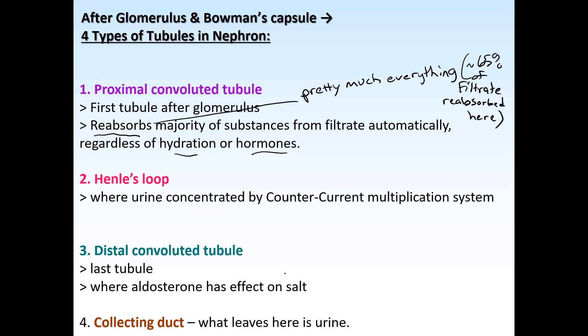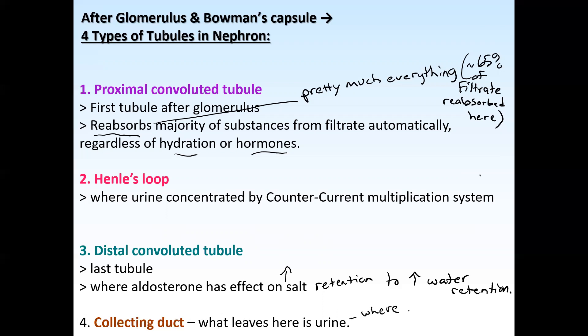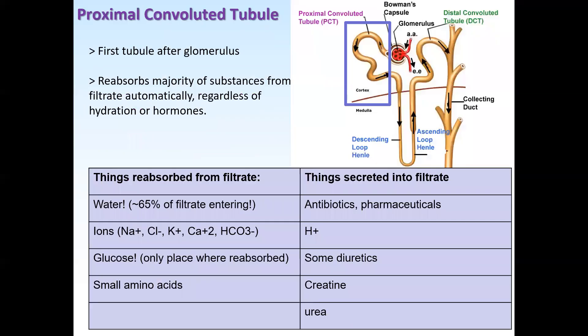At the loop of Henle, there's a counter-current multiplication system. The descending loop is permeable to water but not salt, so water crosses the tubule back into the bloodstream. The ascending loop only allows salt across the tubule back into the bloodstream. At the distal convoluted tubule — the last official tubule of the nephron — aldosterone has its effect, increasing salt retention and therefore water retention. The collecting duct is where ADH has its effect. Once filtrate leaves the collecting duct, it goes to the minor calyx, major calyx, ureter, and out of the body — the collecting duct is the last place urine can be modified.